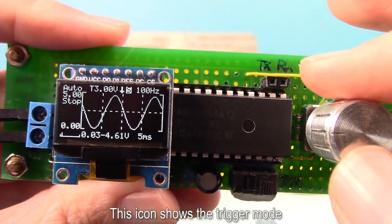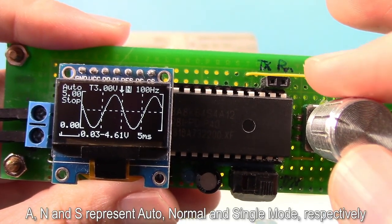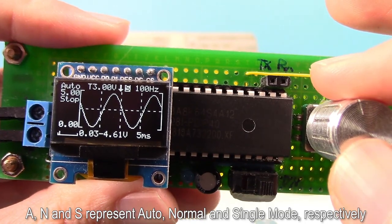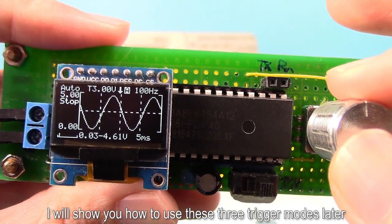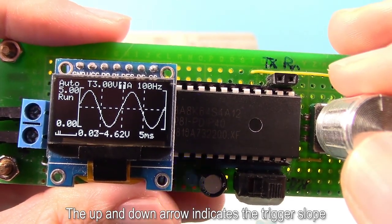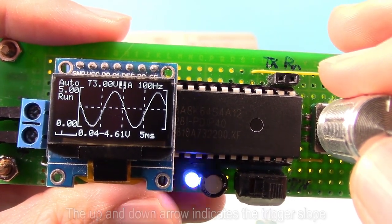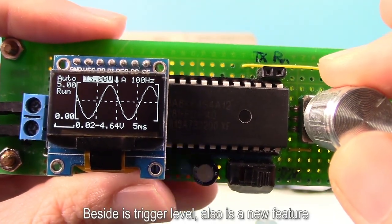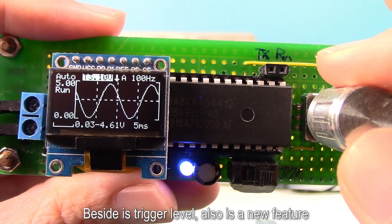This icon shows the trigger mode. A, N, and S represent Auto, Normal, and Single mode respectively. I'll show you how to use these three trigger modes later. The up and down arrow indicates the trigger slope, switching between rising edge and falling edge. Beside it is trigger level, it's also a new feature.